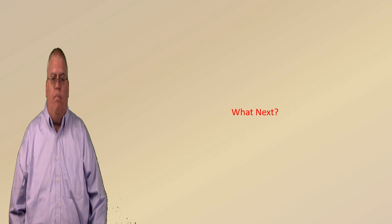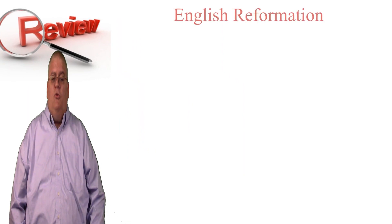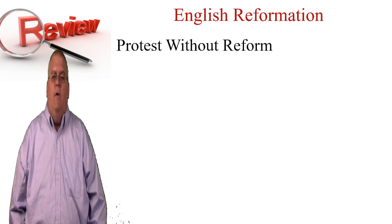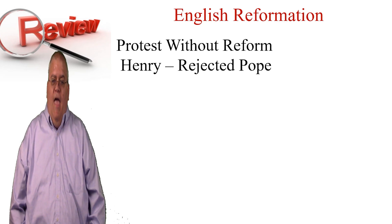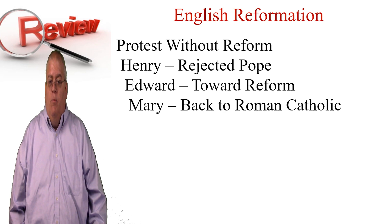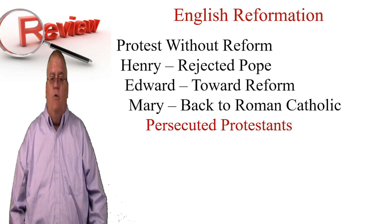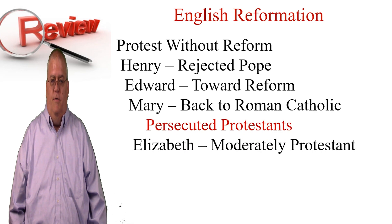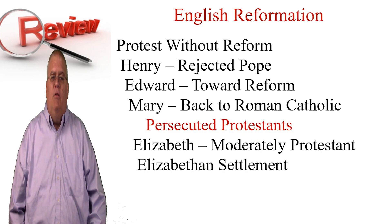But for now, let's review. The English Reformation so far can be characterized as protest without reform. It was mostly the activity of the English royalty deciding the direction of the English Church. Henry VIII rejected the Pope's authority. In Edward's reign, the country moved in a very reformed direction. But in Mary's reign, it strongly moved back to Roman Catholicism, even persecuting Protestants. And finally, in Elizabeth's reign, it moved back to moderately Protestant. The Elizabethan Settlement established the English Church in a fairly, but not fully, Protestant form, and this left a tension that would carry on in subsequent history.